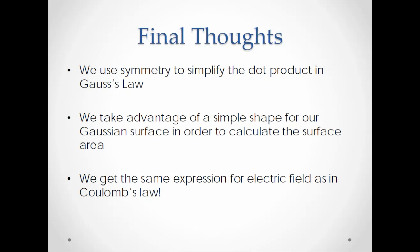So just to finish up, we use symmetry to simplify the dot product in Gauss's law. And then we take advantage of that spherical Gaussian surface in order to calculate the surface area and complete the problem. And it's good that we get kq over r squared because we get the same exact expression for the electric field as we do in Coulomb's law.